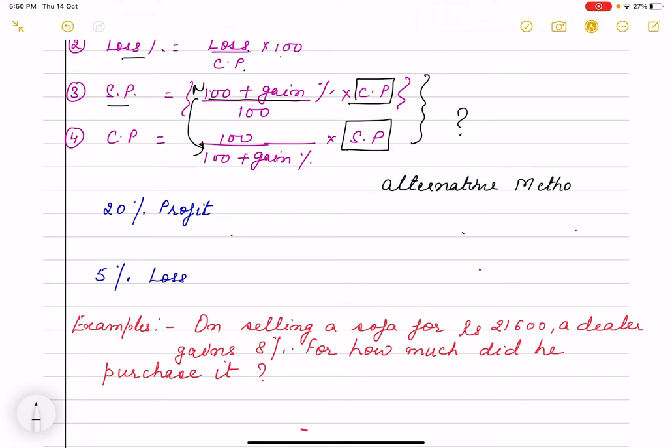So first of all it is necessary that you understand what is 20 percent profit. What does it mean? It means if my CP is 100, we always talk about the percent so that uniformity is maintained. So 100 rupees mein kitna profit. So if CP is 100 rupees that means I have a profit of 20 rupees.